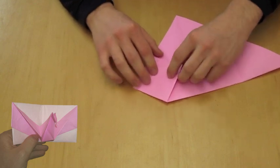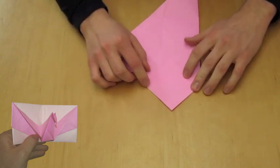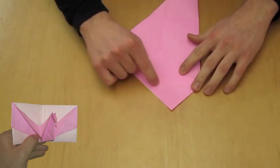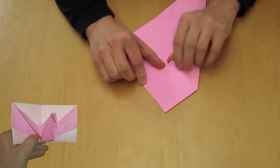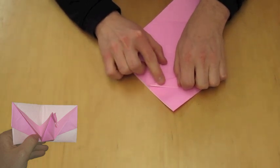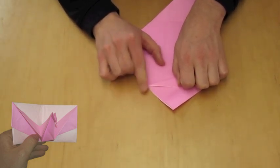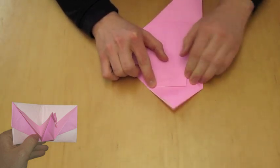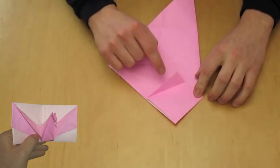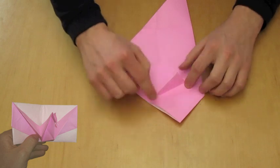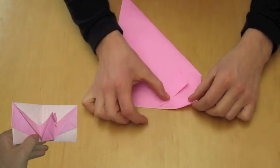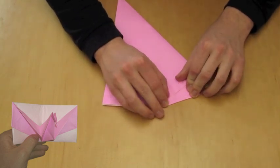Now that you have a square, you're going to valley fold like so. Taking the edges, you're going to line them up along the center of the square. You're going to do that for both sides. It should look something like a kite.